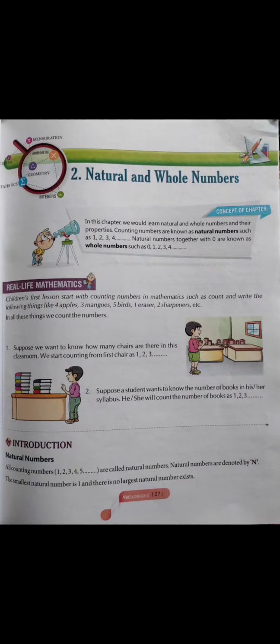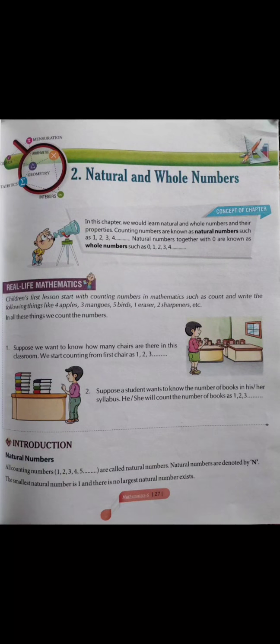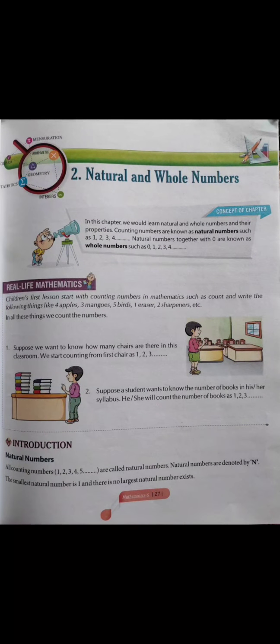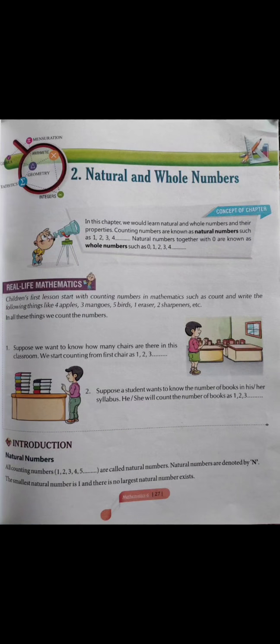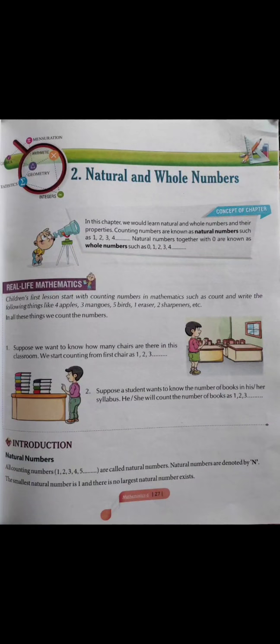Natural numbers start from 1, 2, 3... But all whole numbers are not natural numbers, because whole numbers include 0. This is an important distinction between natural numbers and whole numbers.